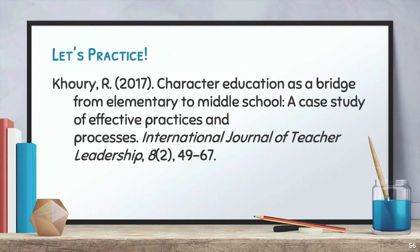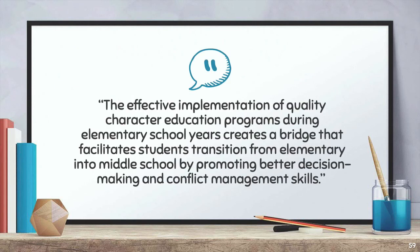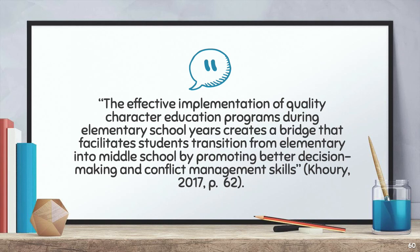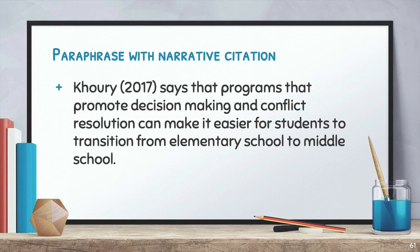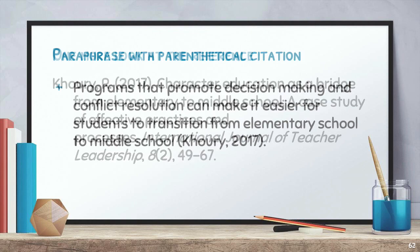Now we're going to practice a couple of different ways to do in-text citations. We're going to start with using a direct quote on a slide. Remember there's one piece of extra information you need for a direct quote if you have access to that information. Since this is a direct quote and a page number is available, you will add a page number to the in-text citation. Note also that this is a parenthetical citation. Here we have a paraphrase of that quotation with a narrative citation — so I have the author's name, the year, and then my paraphrase. Now maybe I want to make a paraphrase and just have a parenthetical citation at the end. And then we will take one more look at the reference as it appears on the reference list.